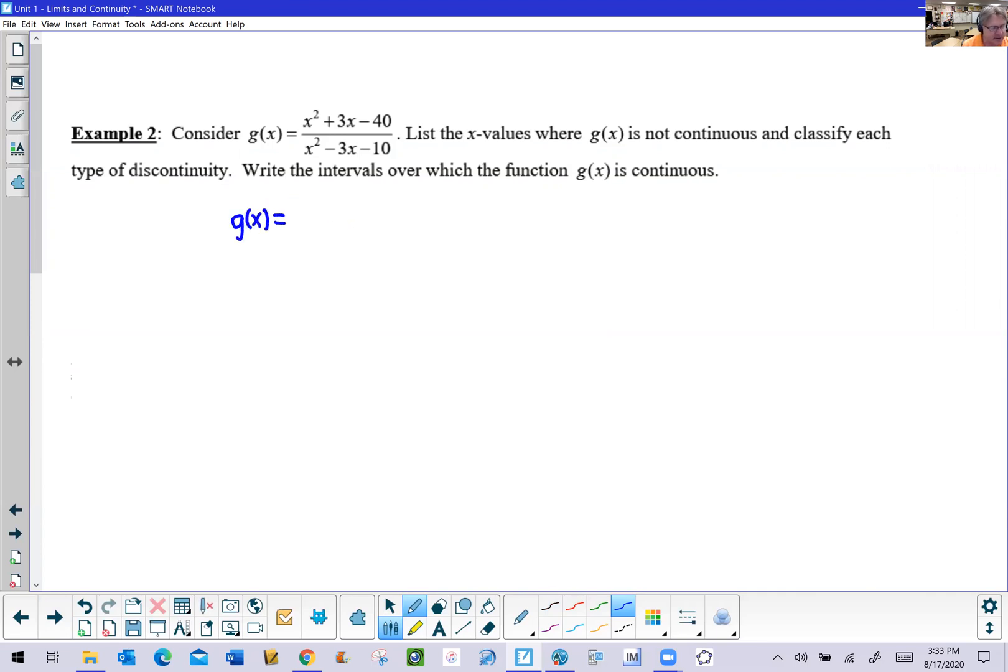And so upon careful examination, we see that the numerator breaks down into, I believe, x minus 5 times x plus 8. We'll double check and make sure that does give us a plus 3x in the middle, and it does.